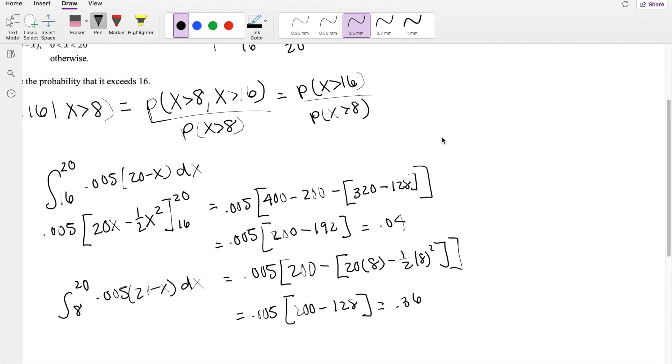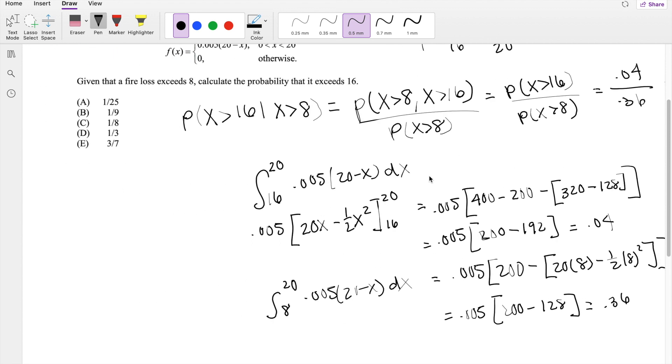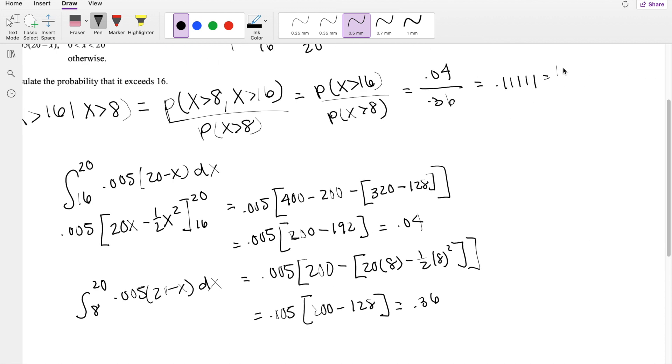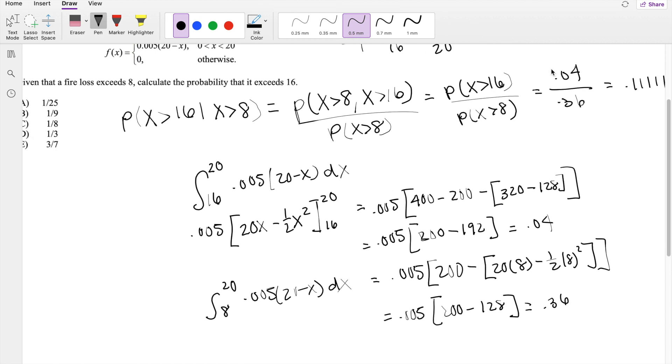So our final probability, numerator is equal to 0.04, denominator is equal to 0.36. This is equal to 0.11111 all the way, which is our answer. Oh, I guess I have to turn it into fraction, which is equal to 1 ninth. Our answer, B.